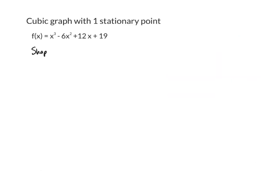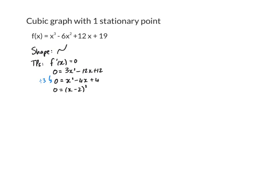Let's get to our next example. I know that the shape will be increasing first; I don't know yet if it goes down in the middle. For the stationary points, as usual, I make my derivative zero. I work out my derivative — it's quadratic, as expected. I'm going to solve the quadratic equation by dividing both sides by 3. I've got a perfect square trinomial which factorizes to x minus 2 all squared. This means x is 2 and there's only one stationary point. I can then work out the y value, which will be 23.